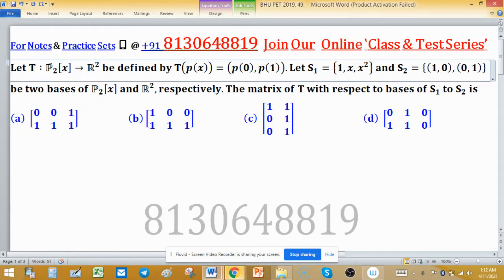Let T be a linear transformation from P₂(x) to R² where the image of any polynomial under T is the ordered pair (P(0), P(1)). If S₁ is the set {1, x, x²} and S₂ is the ordered pair {(1,0), (0,1)}, these are two bases of P₂(x) and R² respectively, known as standard ordered bases.